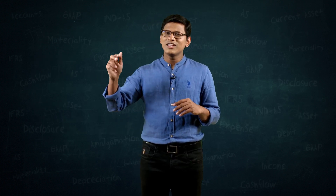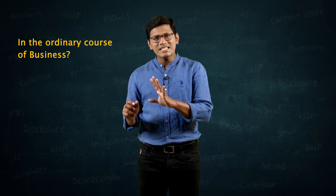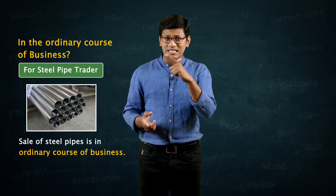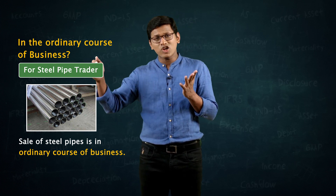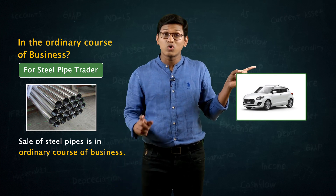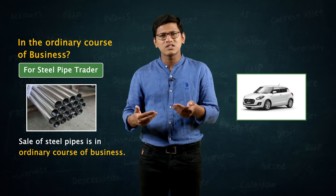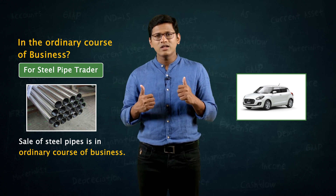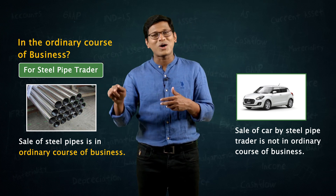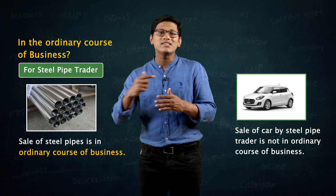Assets held for sale in the ordinary course of business: when a company sells those steel pipes, the sale will be recorded under sales in the P&L account. But if instead of selling pipes, the company sells a car — will the sale value of the car come into the P&L account? It depends on what business the company normally does. If the company says steel pipes trading is our business, then selling a car is not an ordinary activity. You cannot say the car is inventory. Why? Selling a car for a steel pipes trader is not in the ordinary course of business.